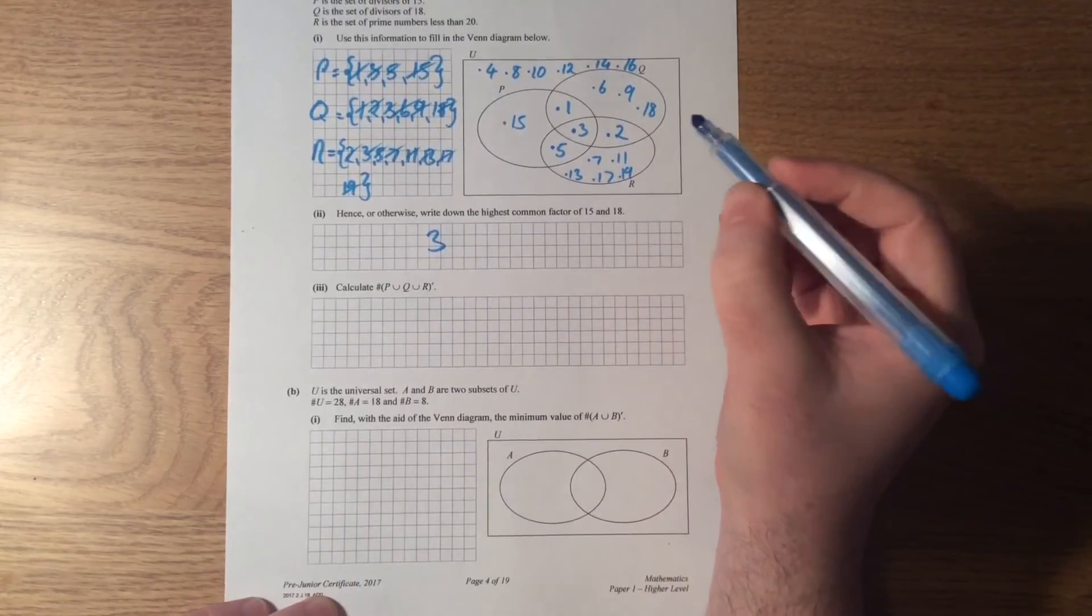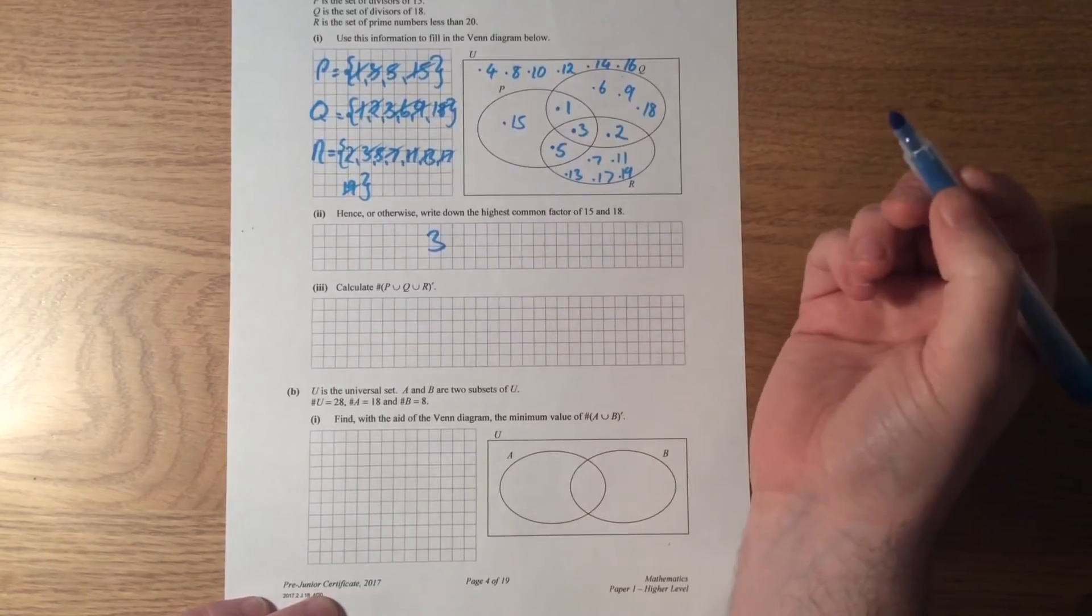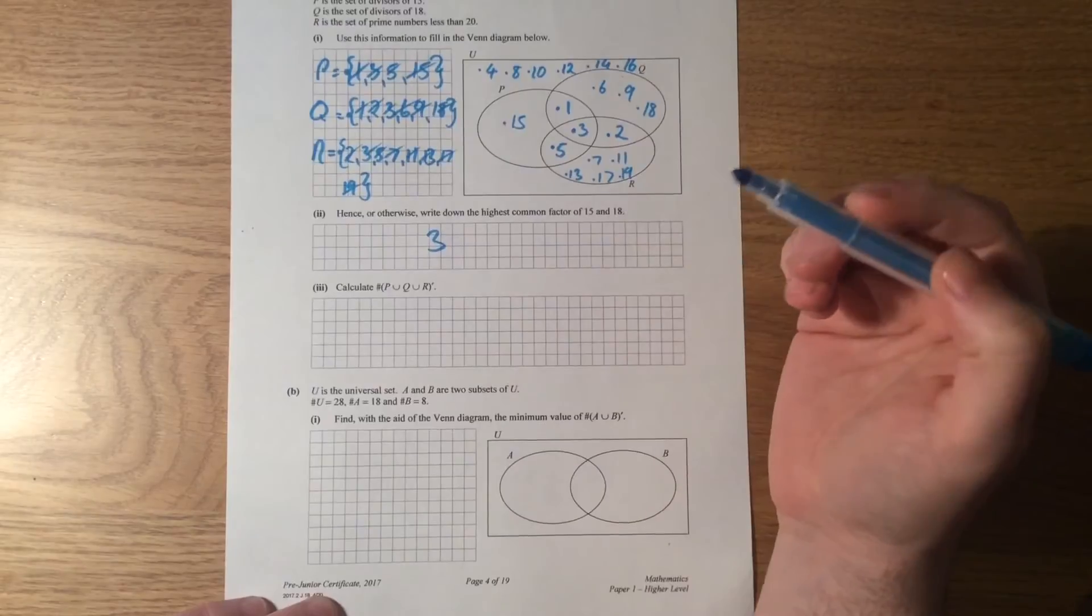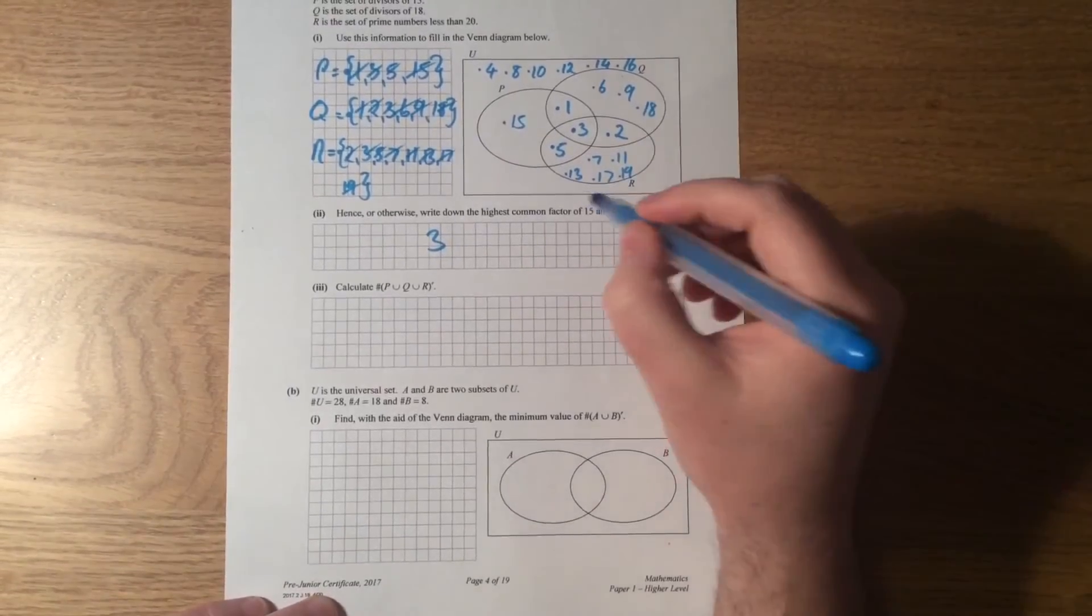So 3 is the highest common factor there of 15 and 18. There are loads of different ways you could do it. A lot of us might have been able to actually work that out in our heads. All right, because you divide 15 by 3, you just divide 18 by 3 and you get a number there. You go 4, it doesn't go in evenly. 5 doesn't go in evenly, and you just kind of work it out yourself.